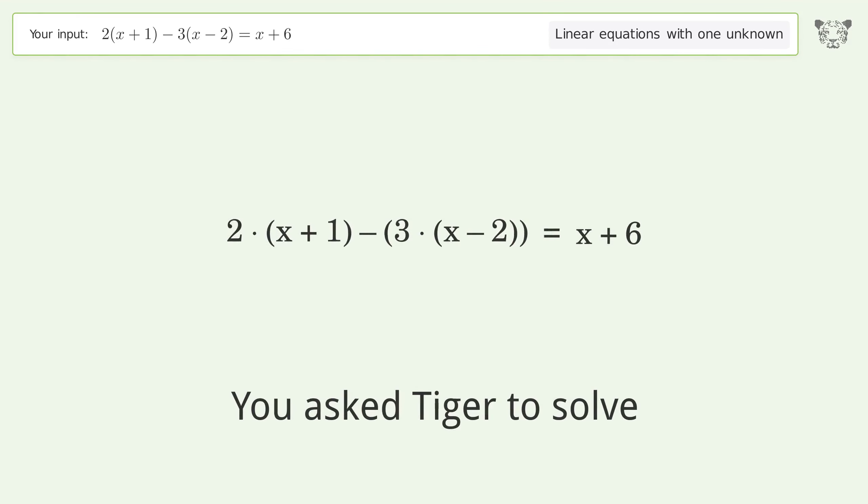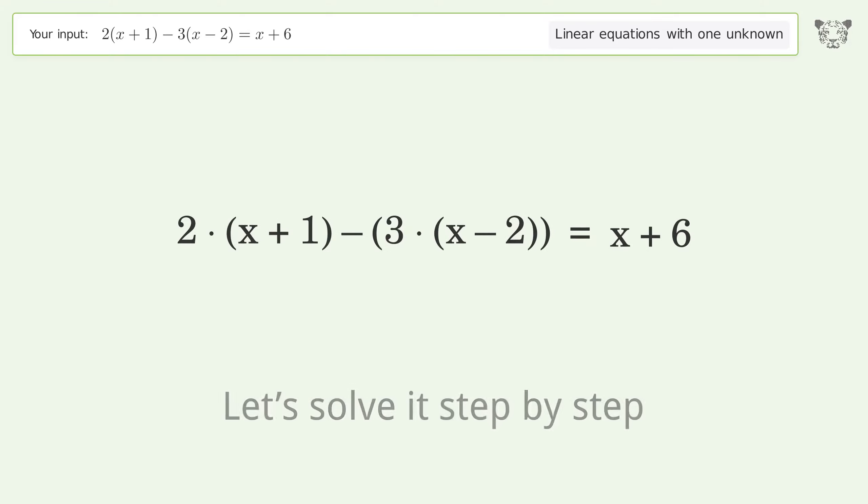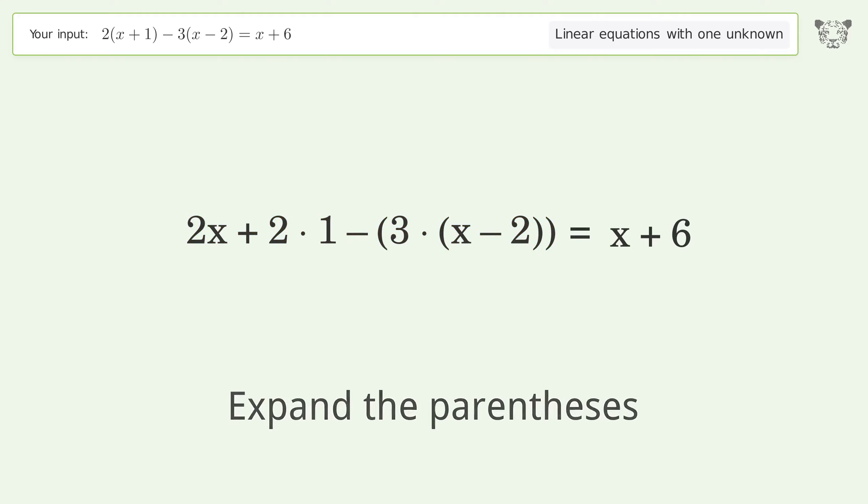You asked Tiger to solve this. This deals with linear equations with one unknown. The final result is x equals 1. Let's solve it step by step. Simplify the expression. Expand the parentheses. Simplify the arithmetic. Expand the parentheses.